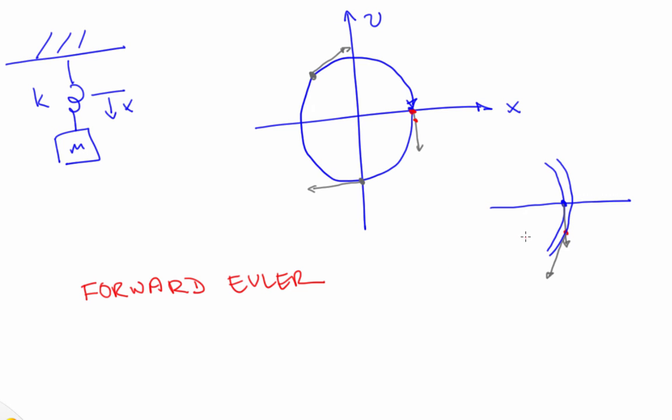So forward Euler's solution to the simple harmonic oscillator equations is not a circle, but an outward spiral.